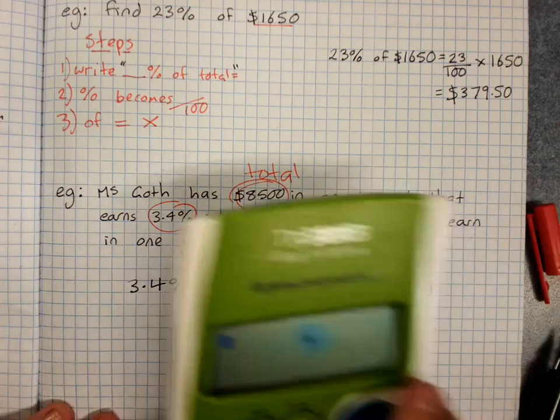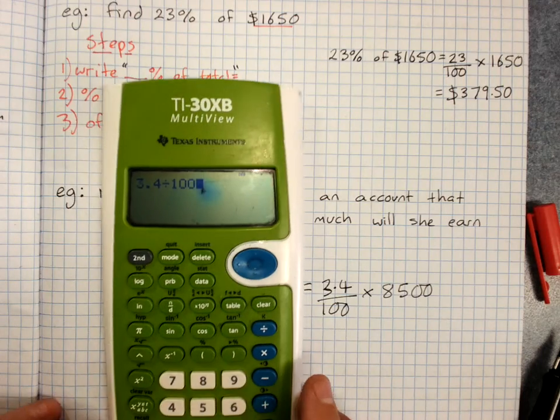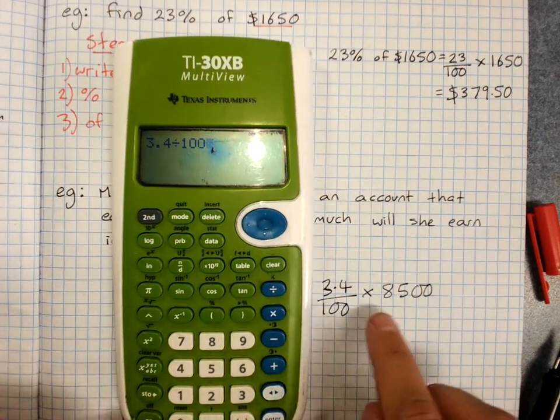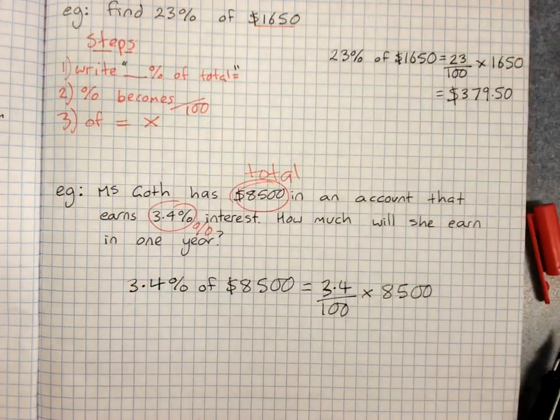And that tells me what to type into the calculator. 3.4 divided by a hundred times $8500. $289.